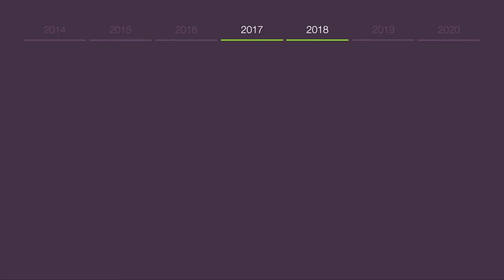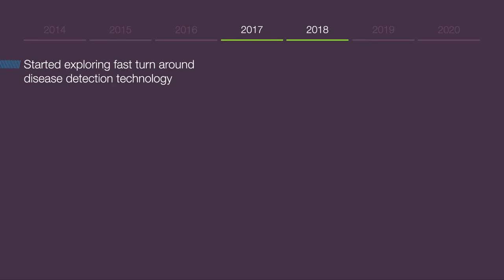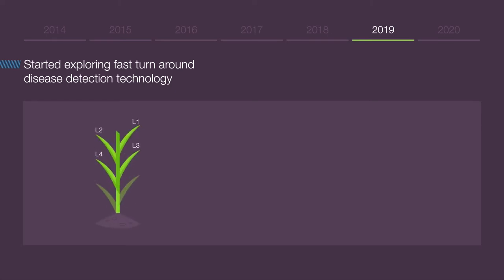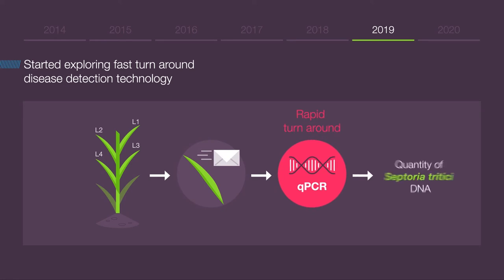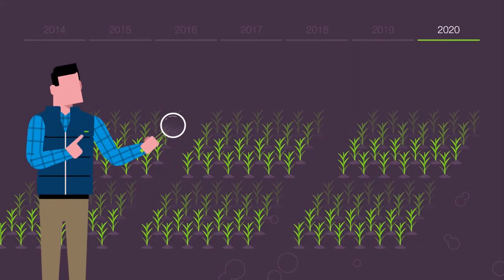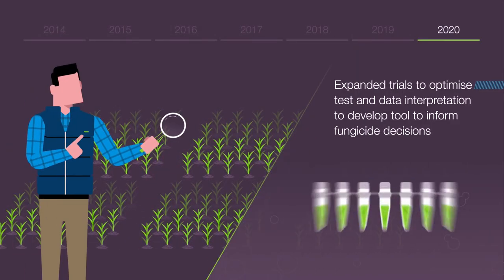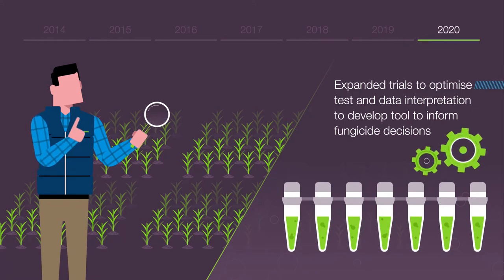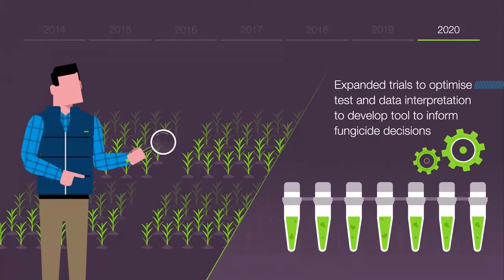Whilst our research was very interesting, we were always being asked when we would be able to conduct fast turnaround results, making them more relevant to in-season fungicide decisions. Therefore, in 2019 we started exploring this possibility and proved that it was possible to speed up the laboratory process from several weeks and months to a matter of days, including postage. During the 2020 cropping season, we expanded our trials even further to optimise the test and data interpretation in order to develop a tool to inform fungicide decisions.